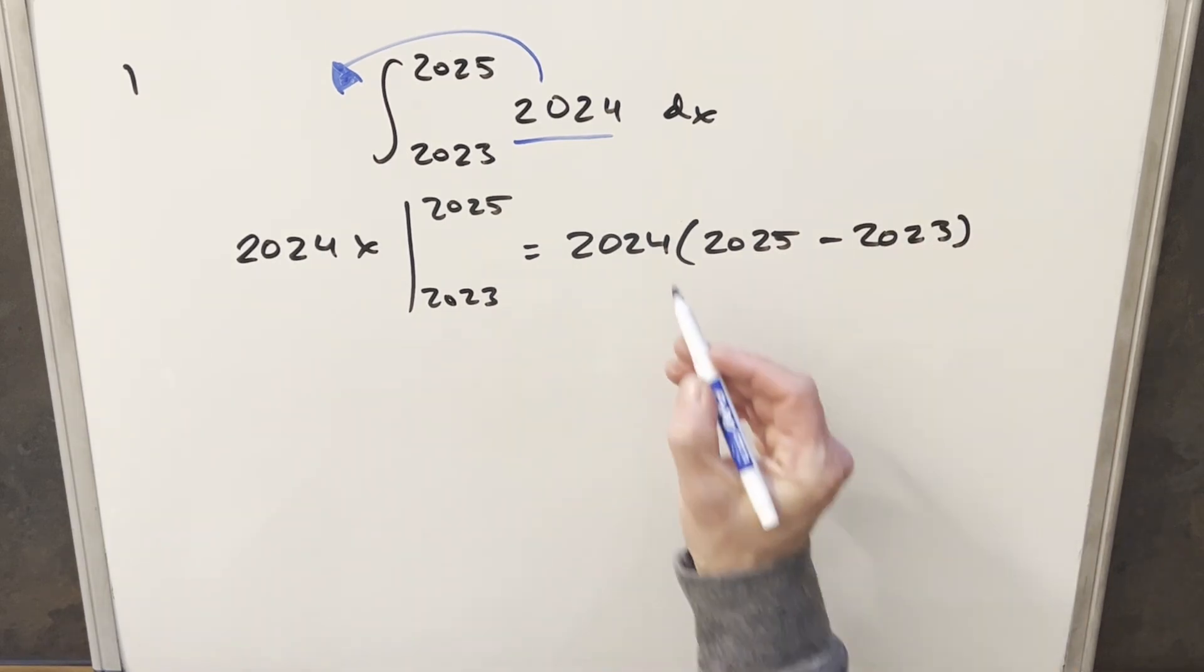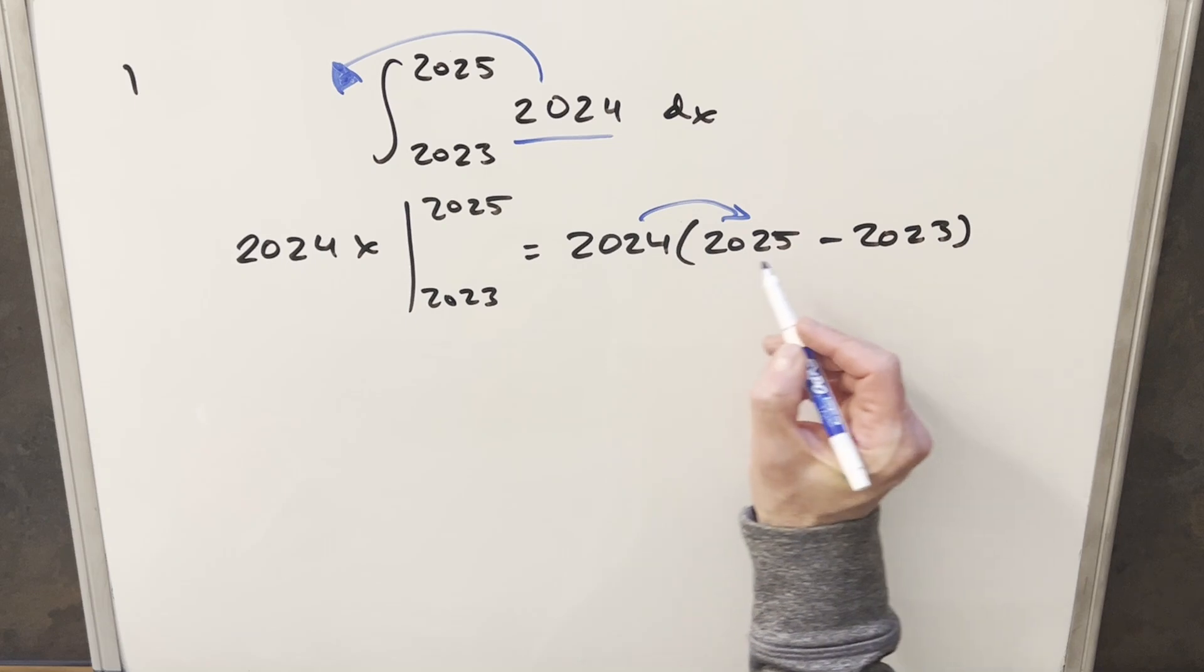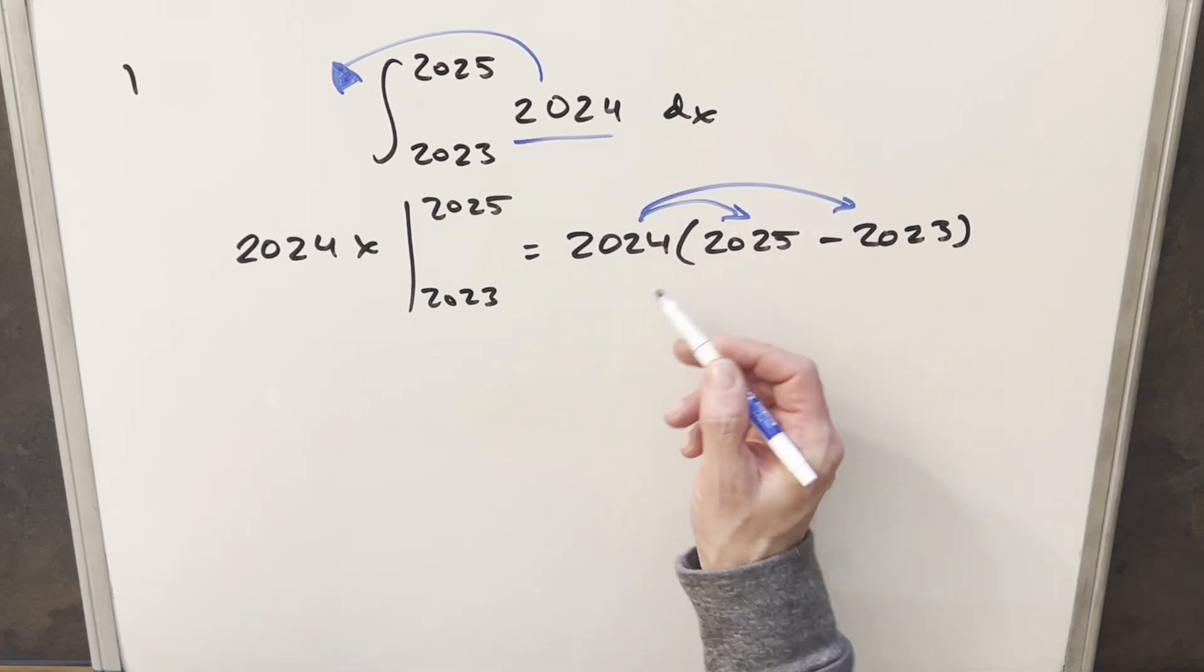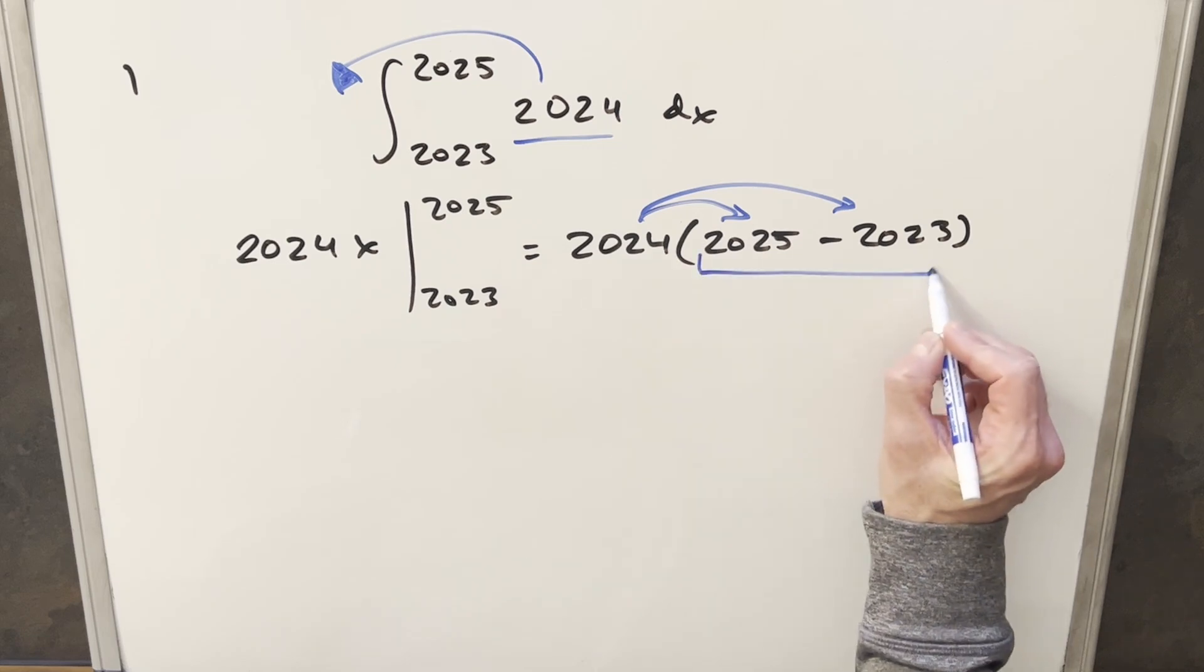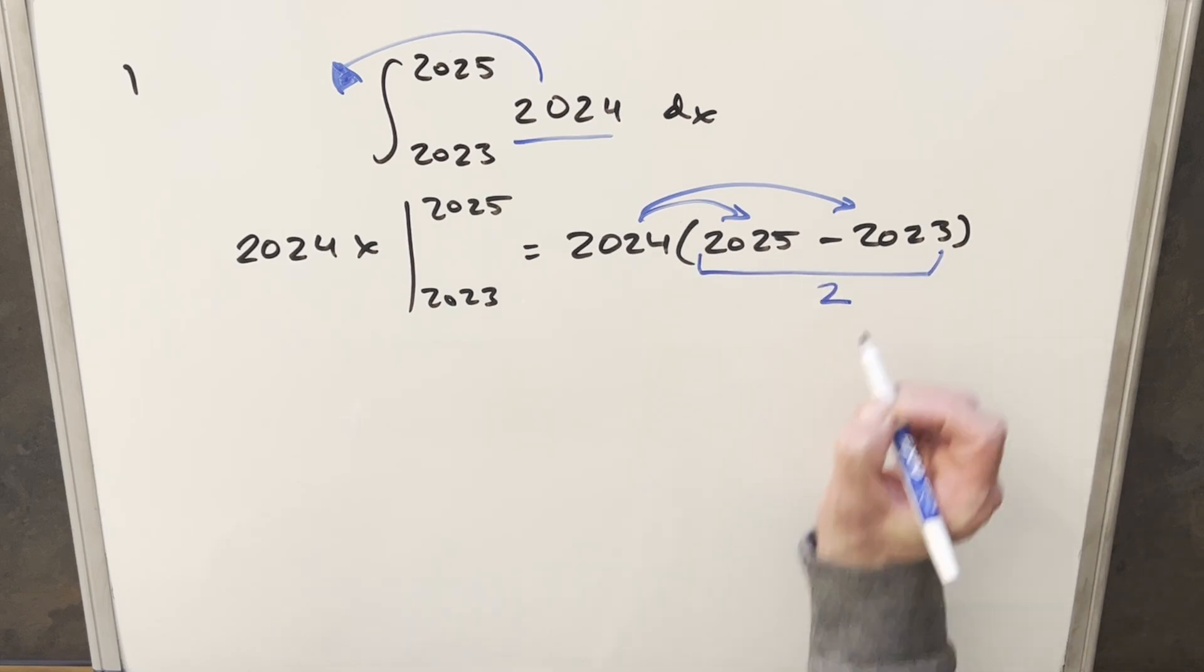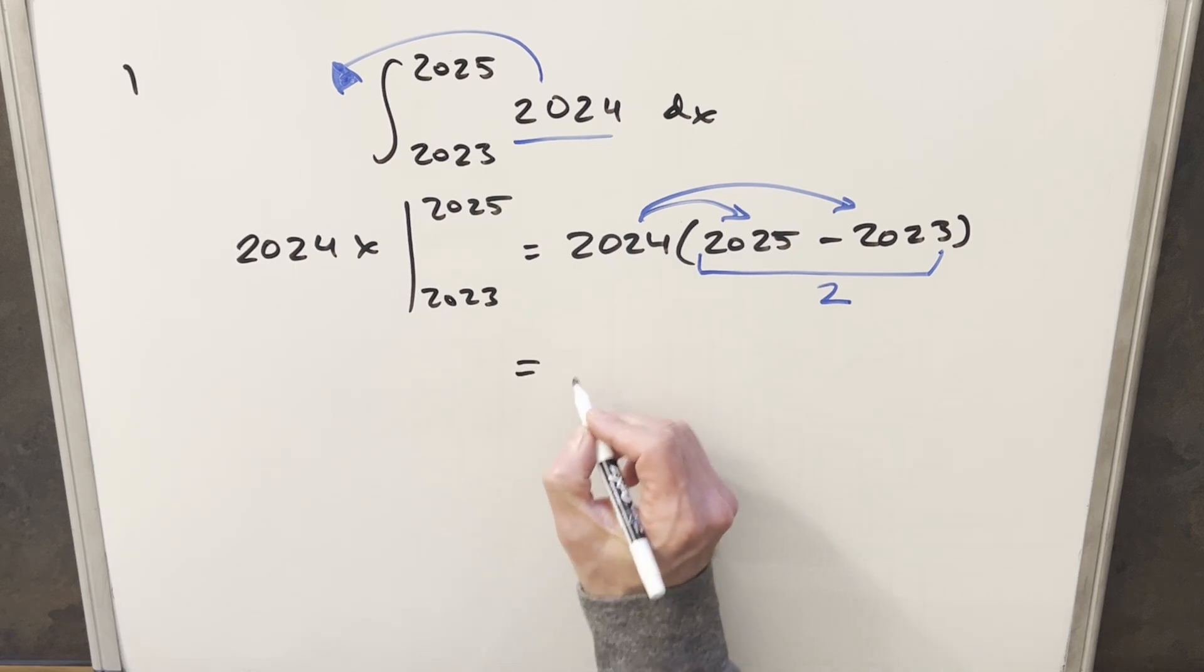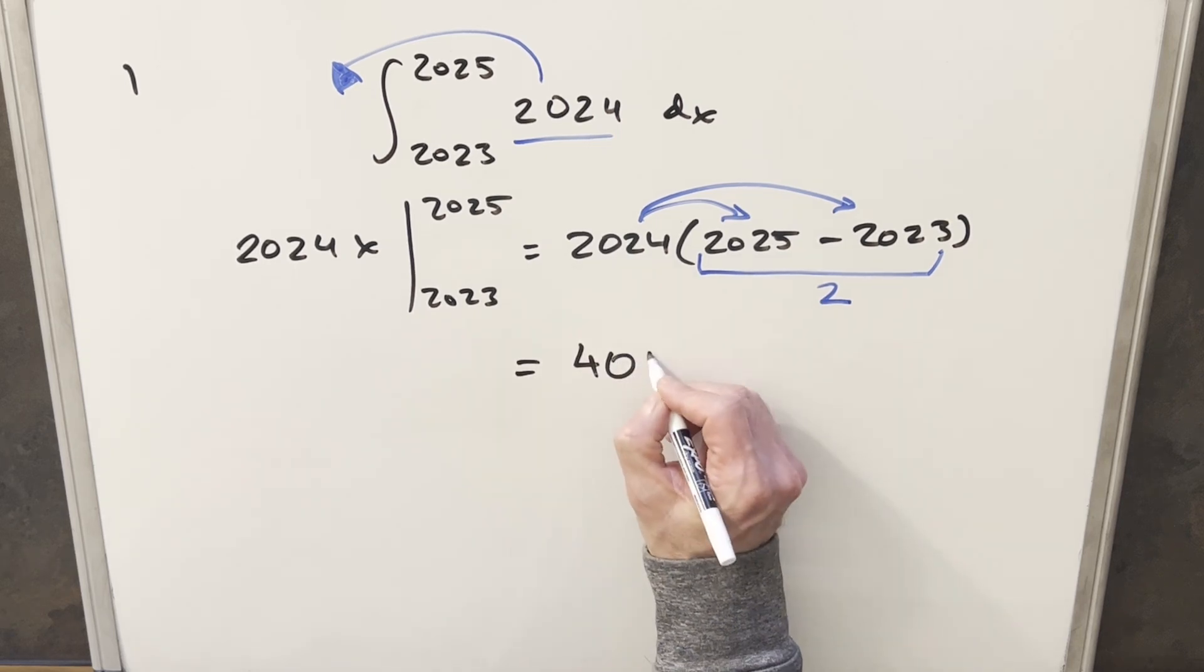And I think here, this is the only place where you could mess it up if you decided to distribute this in and had to pull out your calculator to calculate those two numbers and then subtract them. But what I'll do instead is notice the difference between 2025 and 2023 is just two. So multiplying two times 2024, for my final solution we just get 4048.